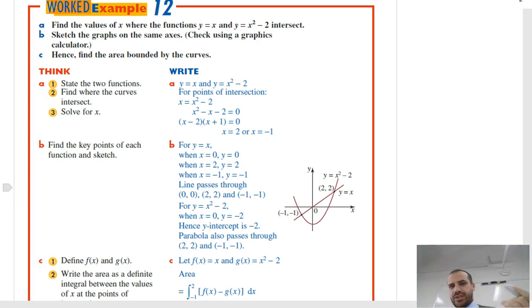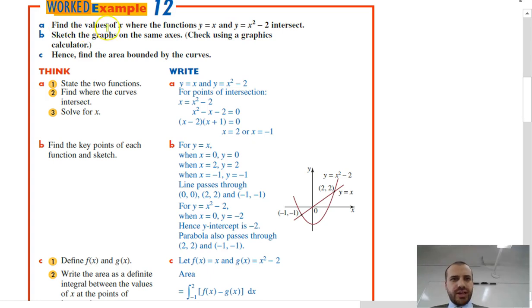I'm just going to talk you through the worked example in the textbook here, because it's not actually that complicated. Find the values of x where the functions y equals x and y equals x squared minus 2 intersect.